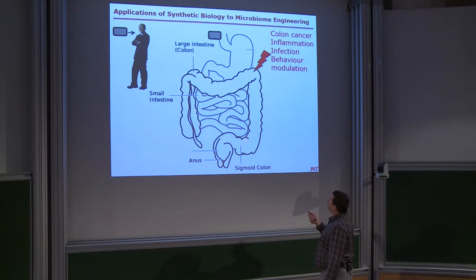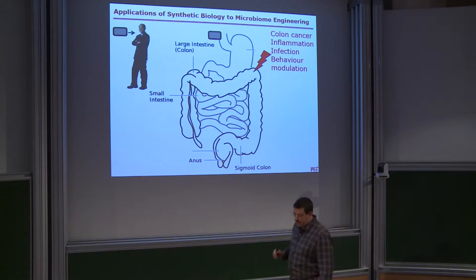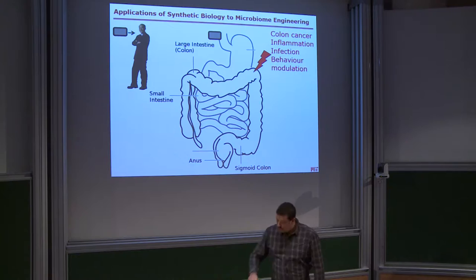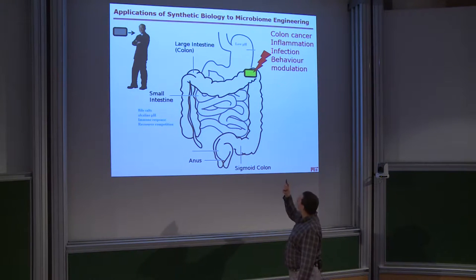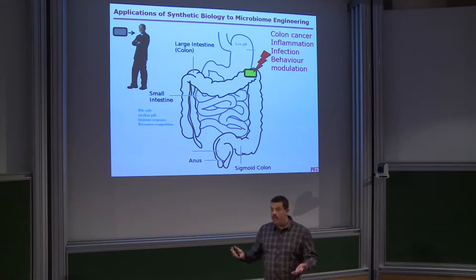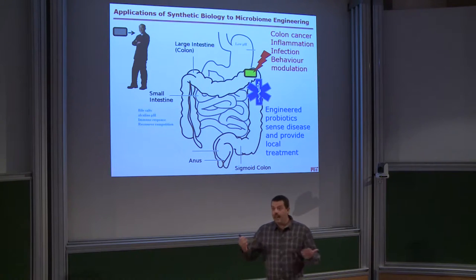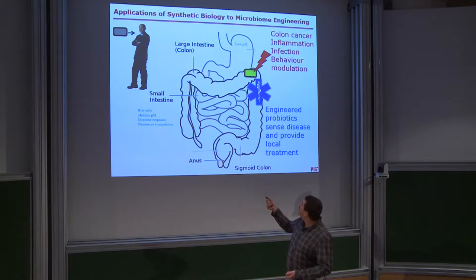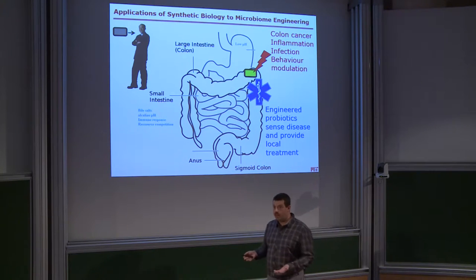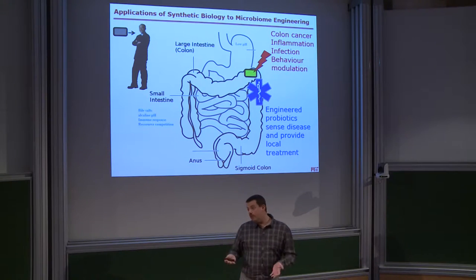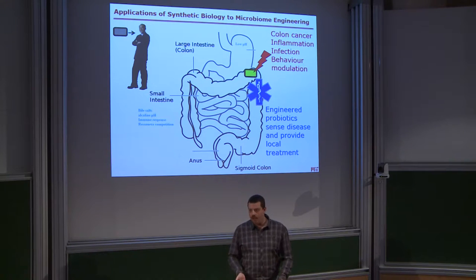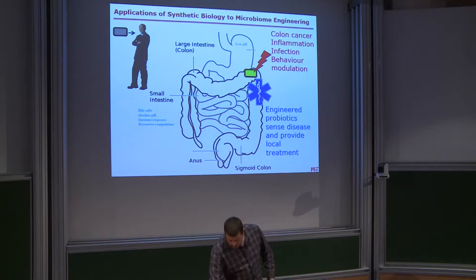The idea is that there may be a problem somewhere in the gut. You design a bug which will be ingested, travel through the stomach all the way through the intestine, reach the site of inflammation or cancer, and then elicit a medical action to cure the problem. Going from the mouth to somewhere in the gut requires passing through many different environments, and this is where most previous applications of microbiome engineering — probiotics and so on — failed. Very few bugs can adapt quickly enough to all those diverse environments to still be alive when they reach the target site.